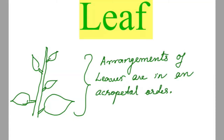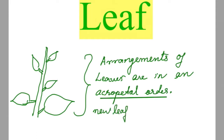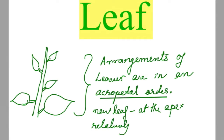The arrangement of leaves is in an acropetal order — that means younger or new leaves at the apex and relatively older leaves at the base. This type of arrangement is known as acropetal arrangement.